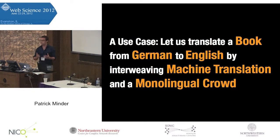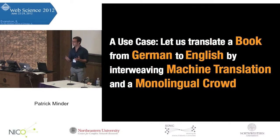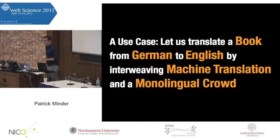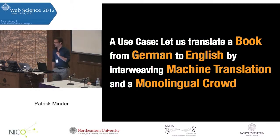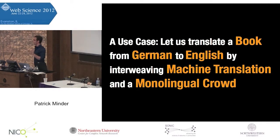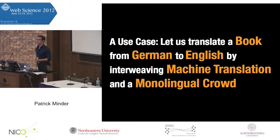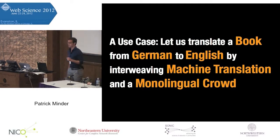So how does it work? I will show you in a little example. Assume the following situation: you have a book in German and you want to translate it into English. The only two things you have are a machine translation software and a large crowd of monolingual workers, meaning they only know English. Now, how to implement such a system?